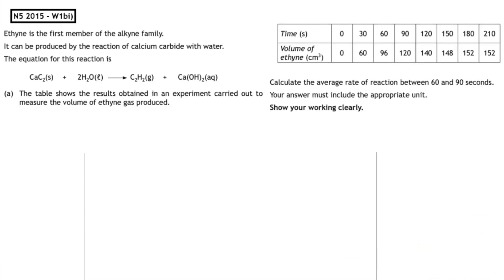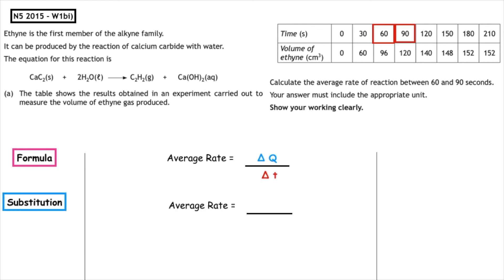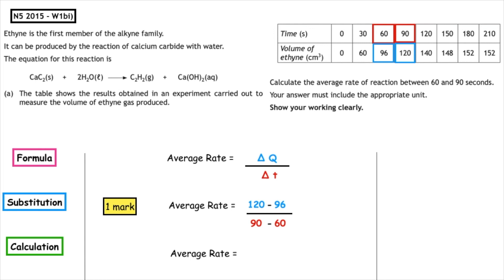This past paper question is from National 5, 2015, written 1B part one. Calculate the average rate of reaction between 60 and 90 seconds; your answer must include the appropriate unit and you must show your working clearly. We write down the formula: average rate is equal to change in quantity over change in time. The time intervals given are 60 and 90, so we write 90 minus 60. For that time interval, the quantity values give us 120 minus 96. That gets us one mark for correct substitution. 120 minus 96 gives us 24, and 90 minus 60 gives us 30. 24 divided by 30 gives us 0.8, which gives us our second mark.